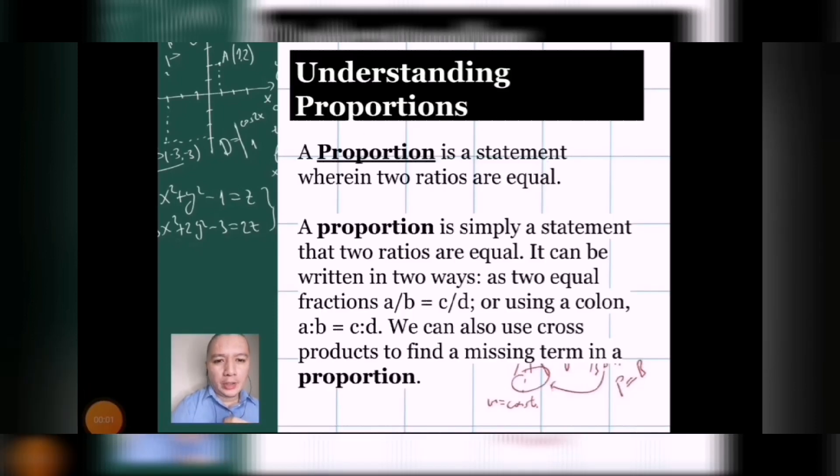First off, we have to understand what a proportion means. A proportion is a statement wherein two ratios are equal. It can be written in two ways. It can be through fractions wherein A over B is equals to C over D or using a colon A to B equals to C is to D. Please take note that we can use any letters we want and all of the letters we have used now are just examples.